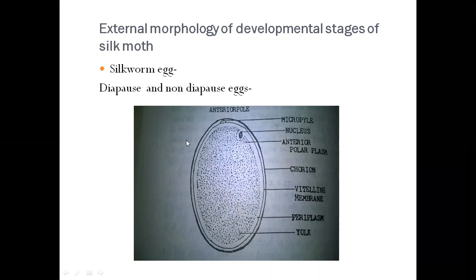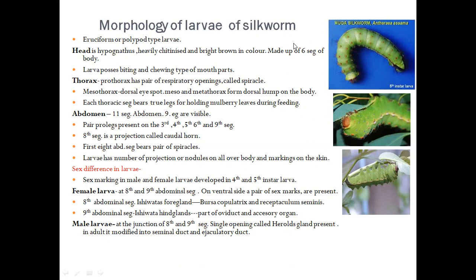Next is the larvae of silk moth. This larva is called eruciform or polypod type larva. Like the adult, the larval body is also divided into three parts: head, thorax, and abdomen.